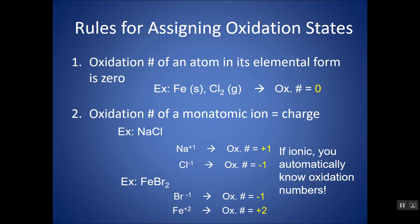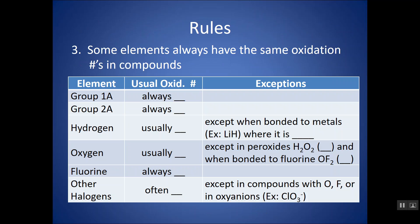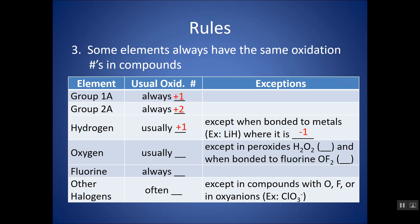Anytime it's ionic, you automatically know the oxidation numbers. For other compounds, there are some rules to know, and sometimes you might have to solve for something. Group 1A is always plus one, and group two is always plus two. Hydrogen is usually plus one. The only time it's not is when it's bonded to a metal and only a metal — something like LiH. Since group one is always plus one, for the compound to be neutral, if Li is plus one, that forces the hydrogen to be negative one.